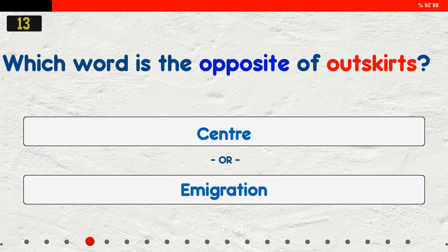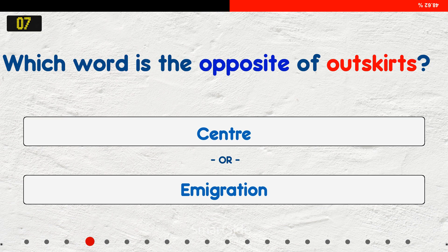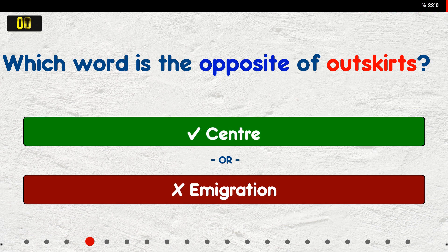Which word is the opposite of outskirts? A. Center. B. Emigration. The answer is center.